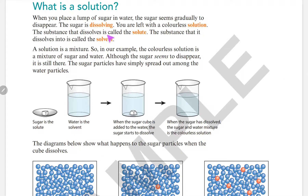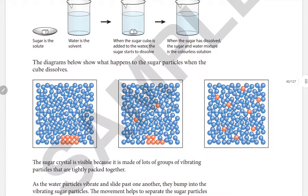The substance that dissolves is called solute. The substance that is dissolved into is called solvent. In your notes, write these definitions. Sugar is the solute and water is the solvent. When the sugar cube is added to water, the sugar starts to dissolve, forming a colorless solution.